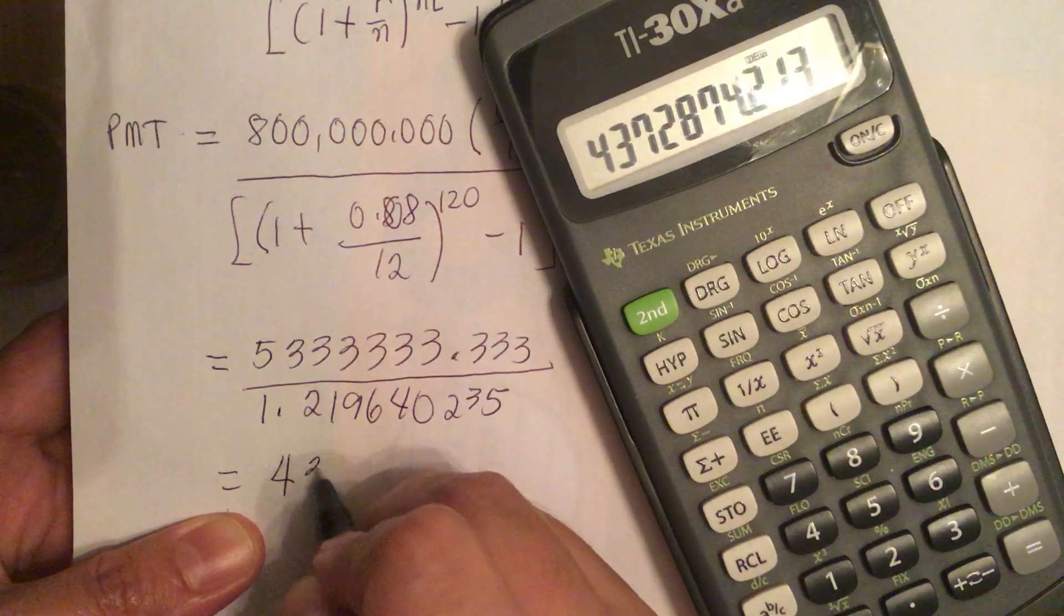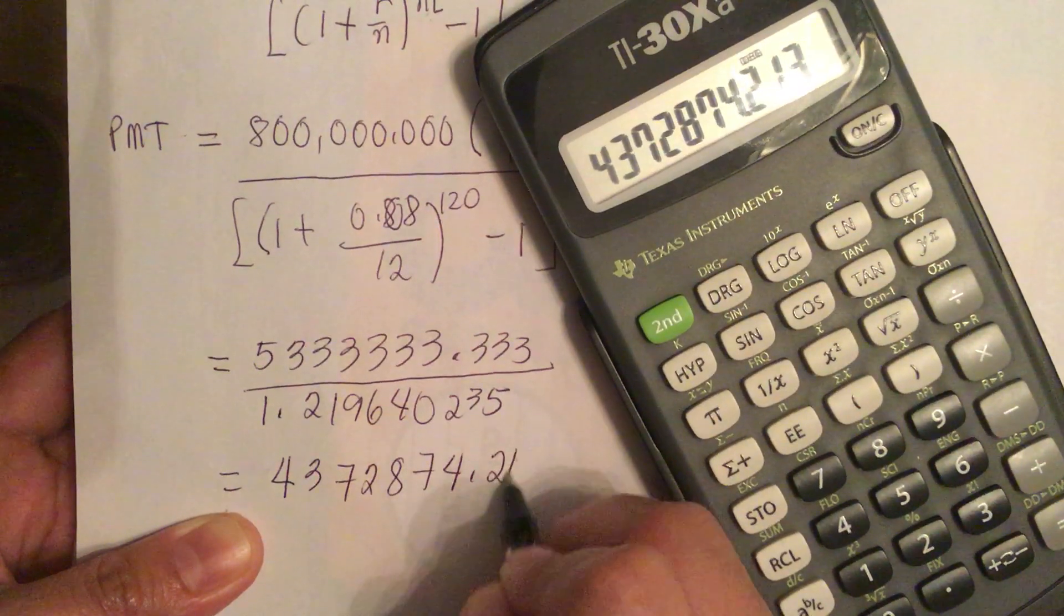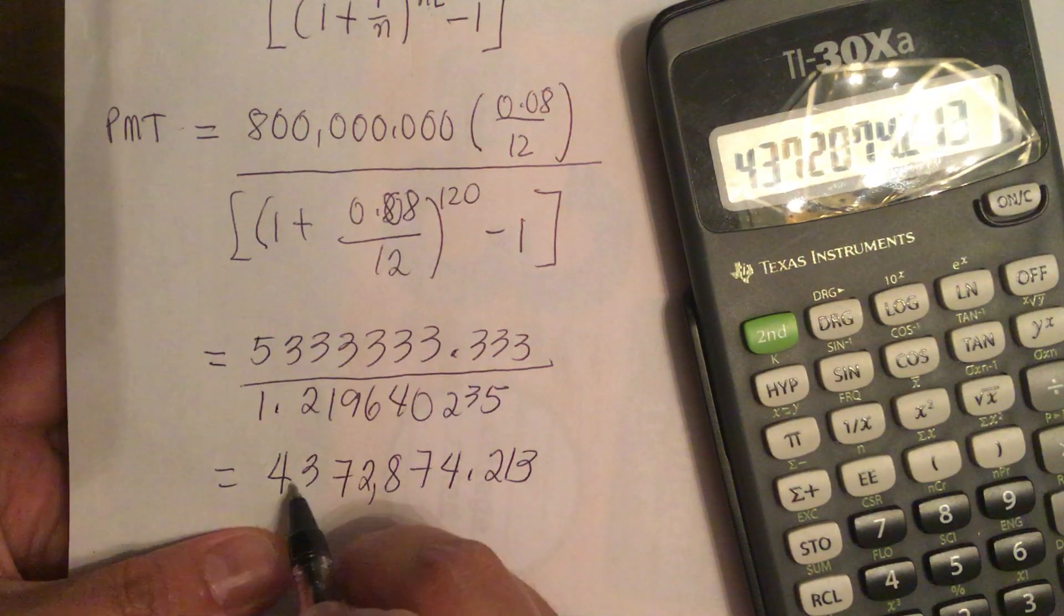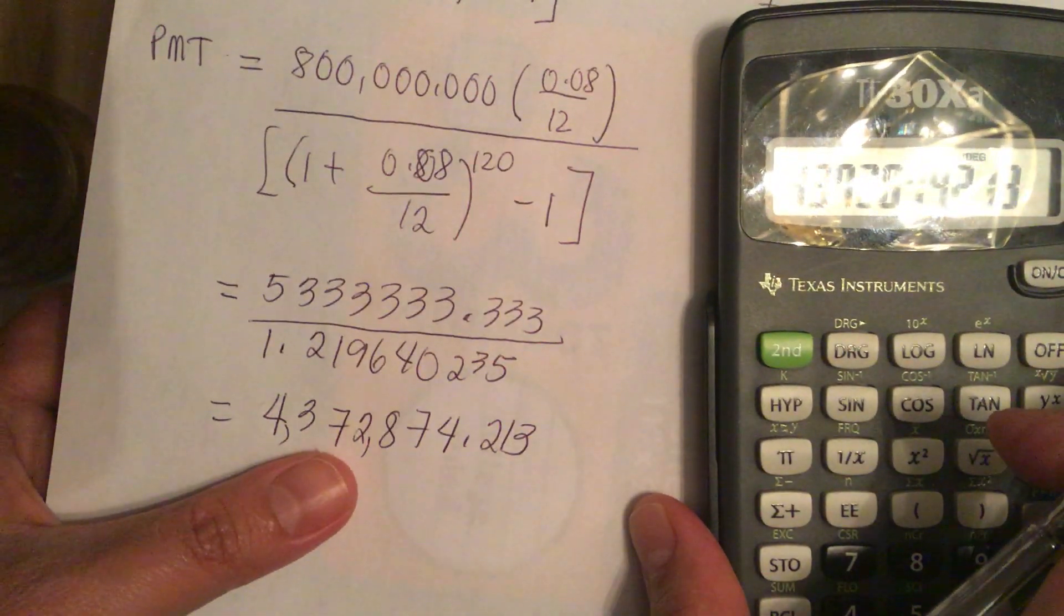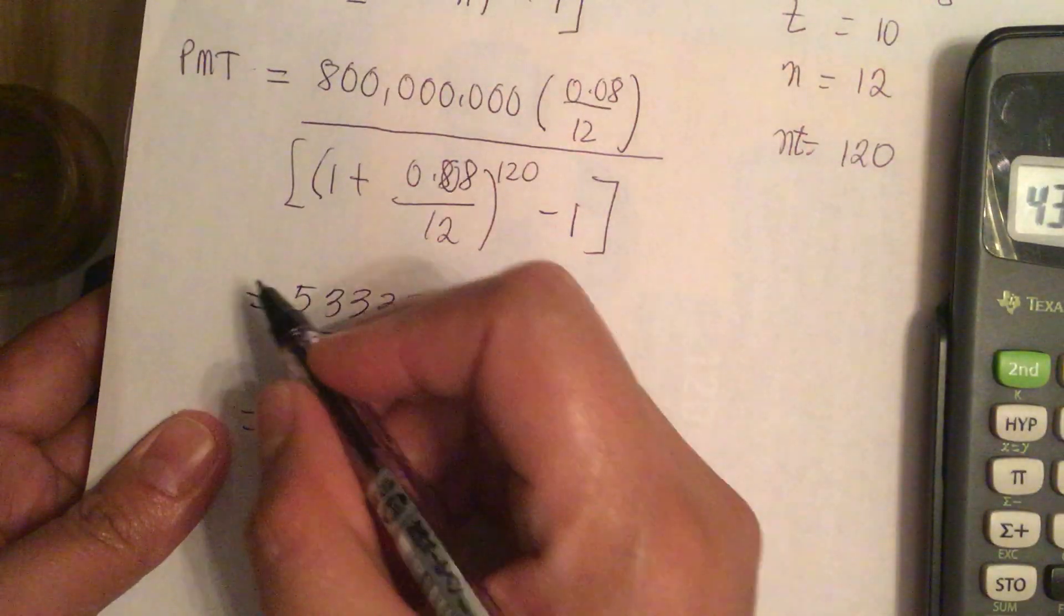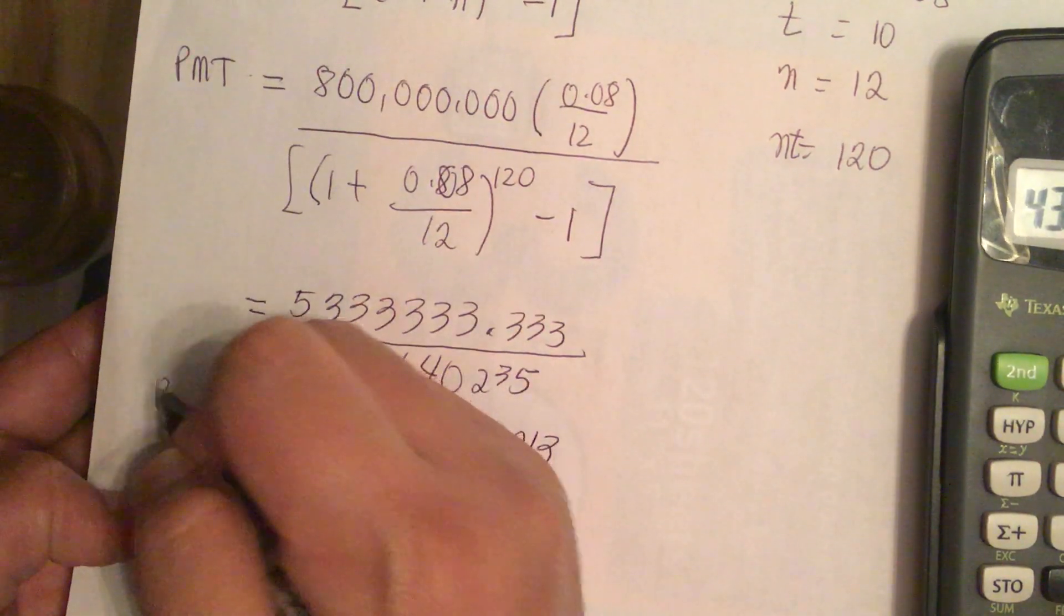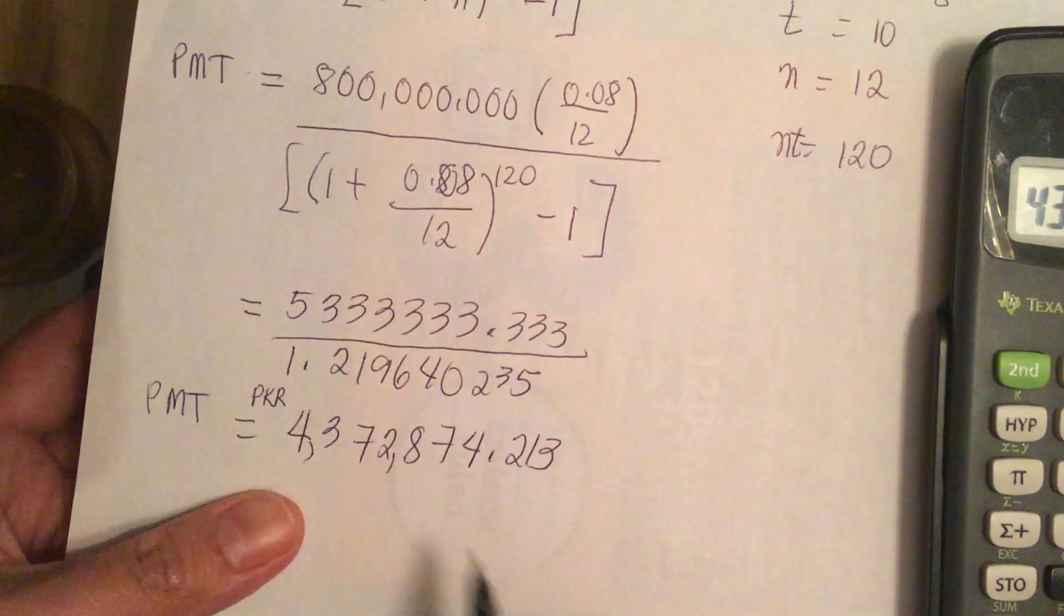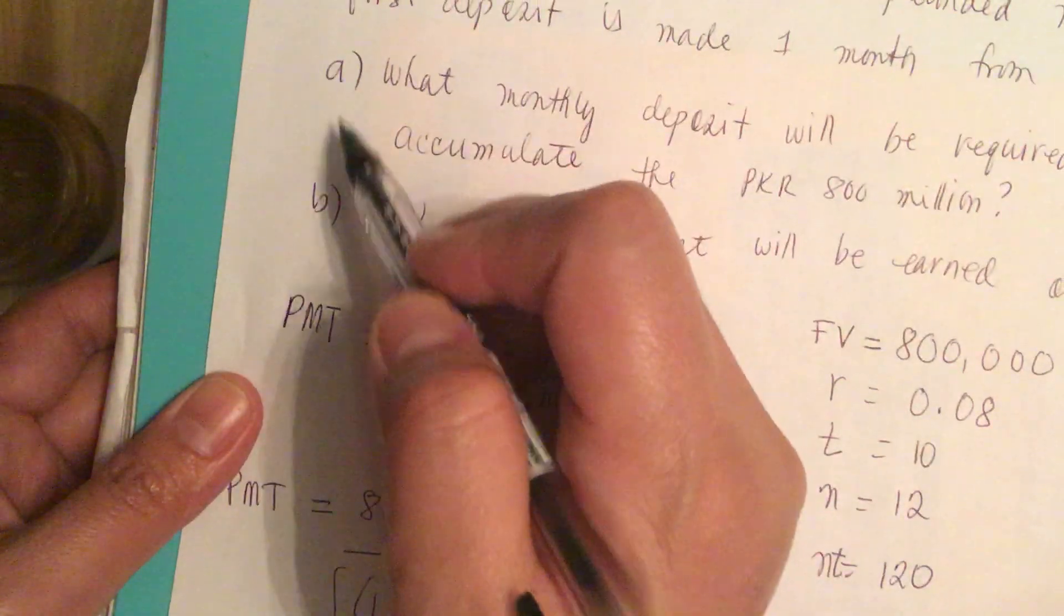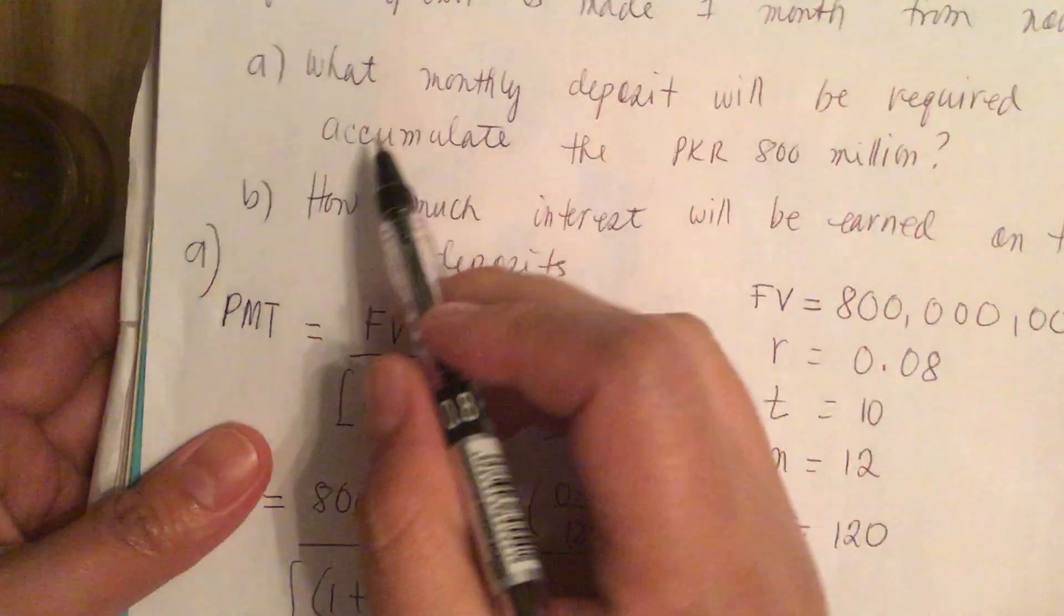It equals 4,372,874.213. So this is 4 million, 372 thousand, 874.213 PKR. This is the monthly payment, so this is part A.